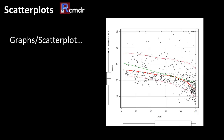One nice way to explore relationships is scatter plots in R Commander. Here we have done a scatter plot of age versus median value. We can clearly see that as age increases the median value tends to be lower — older properties or older neighborhoods have lower median property values.